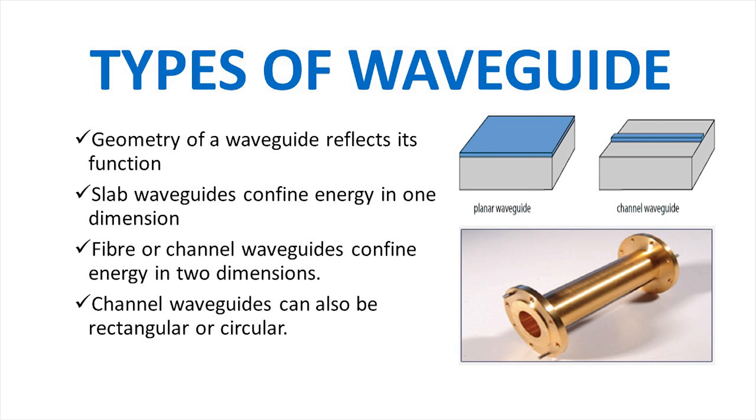Waveguides can also be classified depending on the number of dimensions of energy confinement. Slab waveguides confine energy in one dimension. Fiber or channel waveguides confine energy in two dimensions. Fiber waveguides can also differ in shape; they can be rectangular or circular.